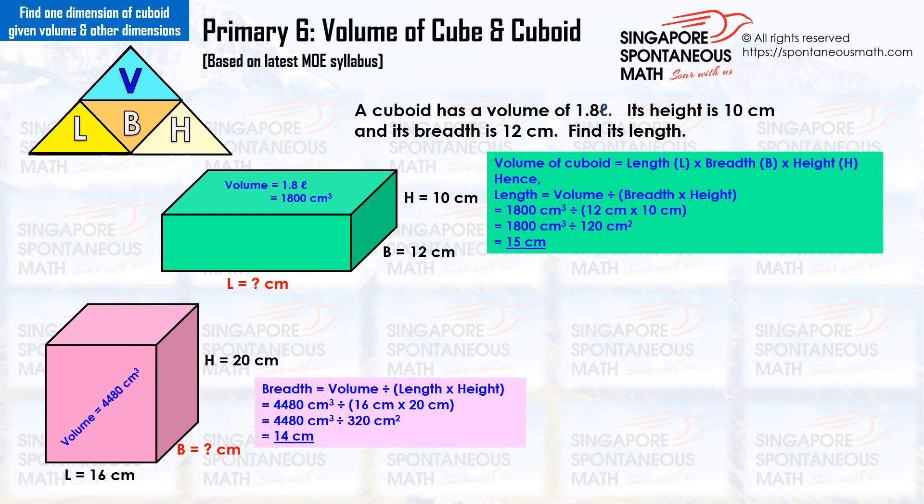We have the length and the height — multiply them: 16 cm times 20 cm equals 320 cm². To find the breadth, we take the volume divided by the figure for length times height: 4,480 divided by 320 equals 14. The breadth of the cuboid is 14 cm.